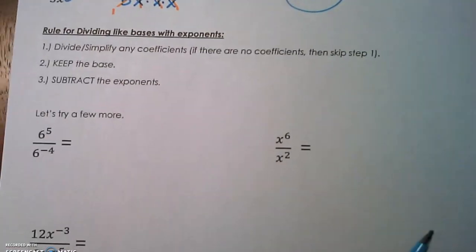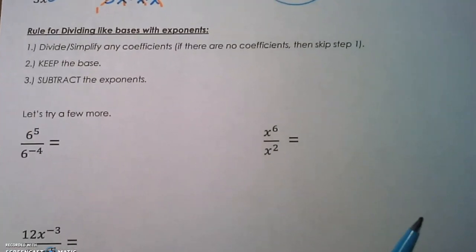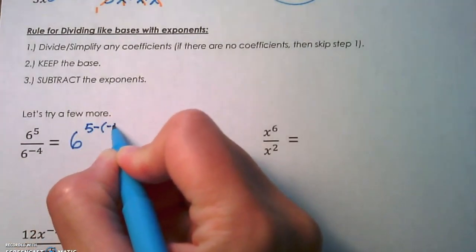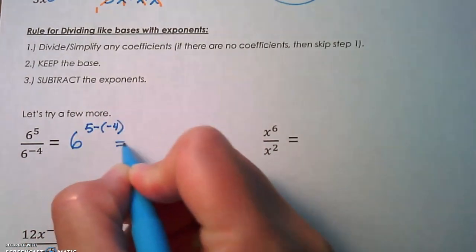Let's try some more examples. 6 to the fifth divided by 6 to the negative 4—we're going to keep the base. We are going to do 5 minus negative 4. Remember those integer rules—that's going to be 6 to the 5 plus 4, which is 6 to the ninth.